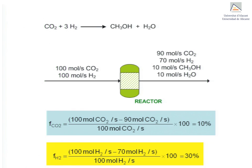For hydrogen, 30 moles per second react. Therefore, we obtain a 10% conversion of carbon dioxide and a 30% conversion of hydrogen. In this concrete case, each reactant has a different conversion, and we distinguish between them by using a different subscript for each component.